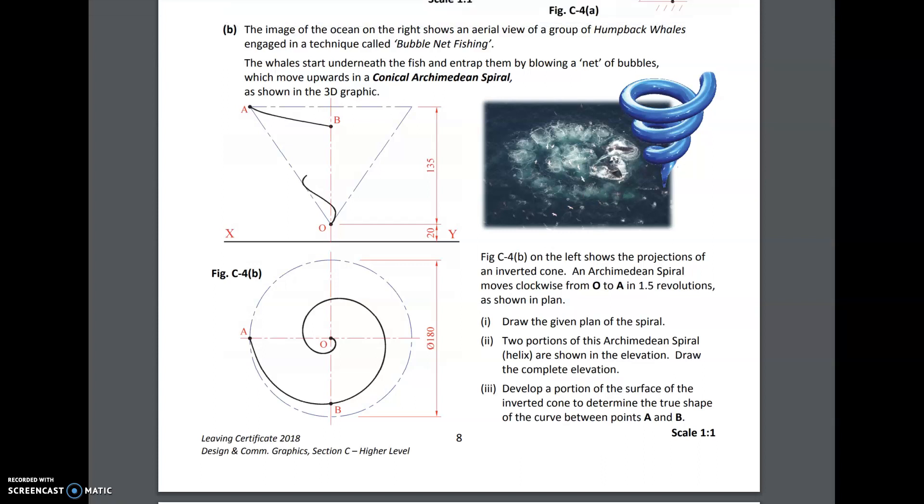So I am going to take part B on this one, the Archimedean spiral. The image of the ocean on the right shows an aerial view of a group of humpback whales engaged in a technique called bubble net fishing. The whales start underneath the fish and entrap them by blowing a net of bubbles which move upwards in a conical Archimedean spiral as shown in the 3D graphic.